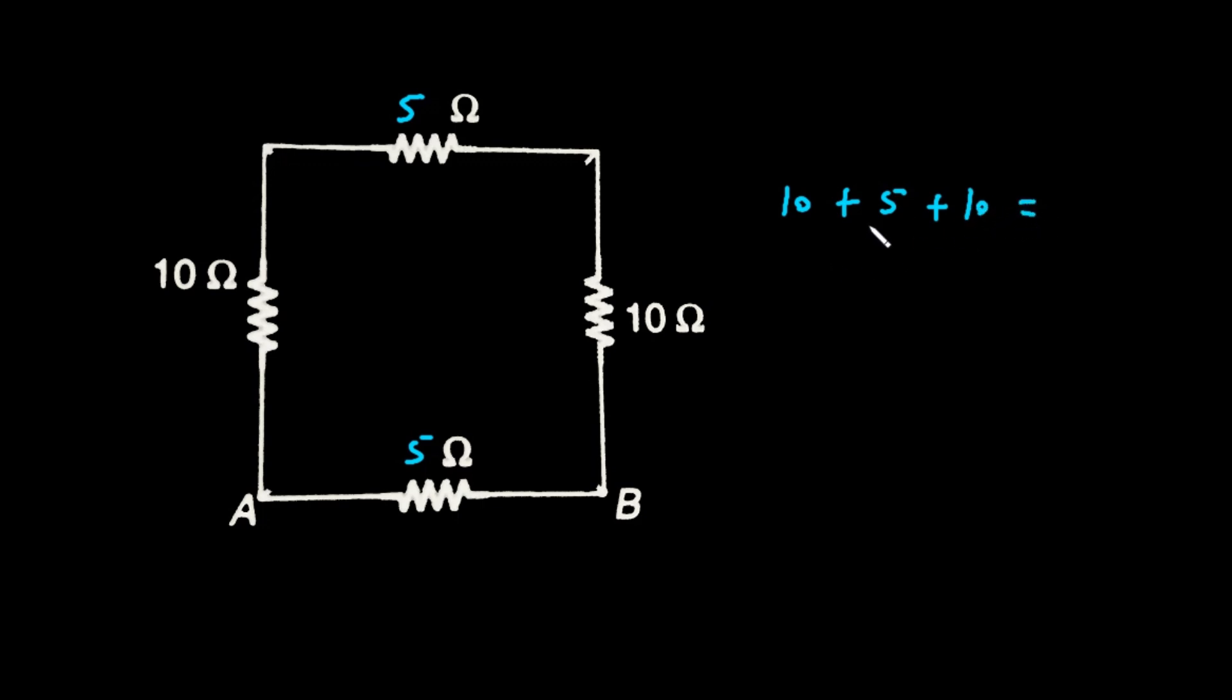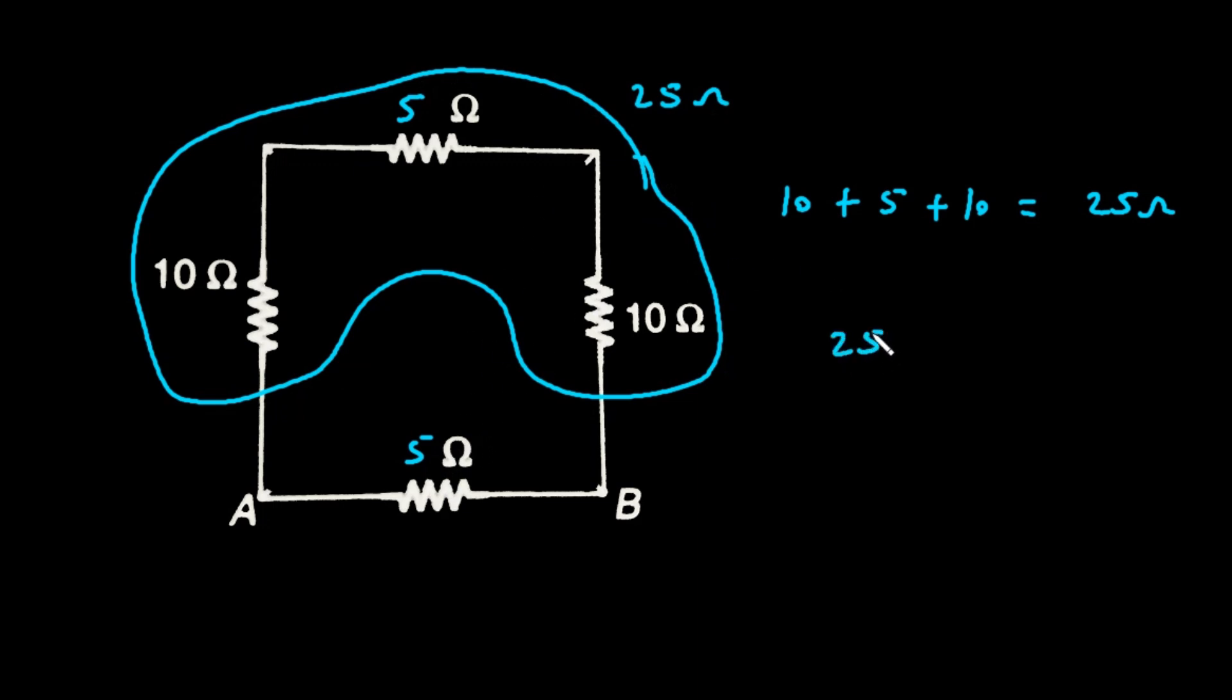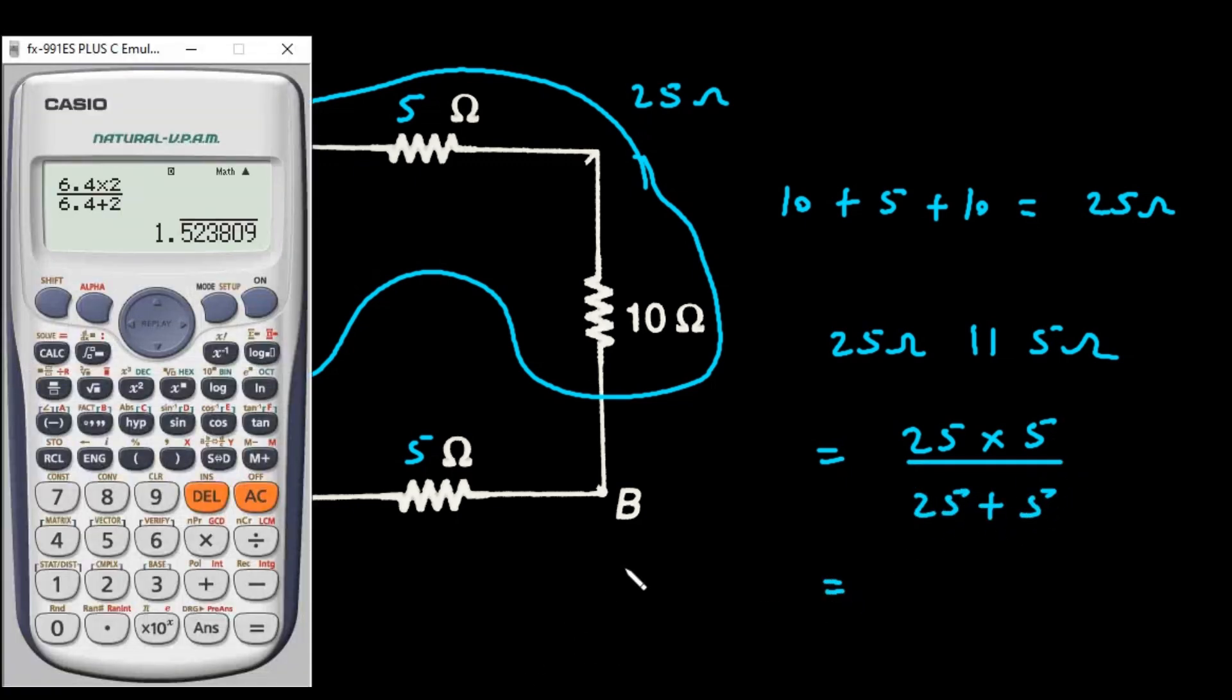So it will be 10 plus 5 plus 10, which is 25 ohm. Now this 25 ohm and this 5 ohm they are connected in parallel. So 25 ohm parallel with 5 ohm, it will be 25 into 5 divided by 25 plus 5.